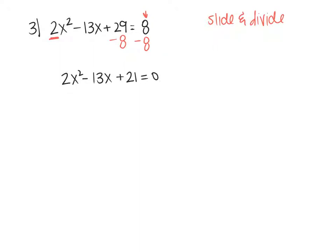Because I have a number in front of the x squared, I'm going to use slide and divide. Slide and divide says you take A and slide it down to C. When you slide, you multiply. I'm going to move A down, which leaves just x squared, minus 13x plus 2 times 21, which gives me 42.